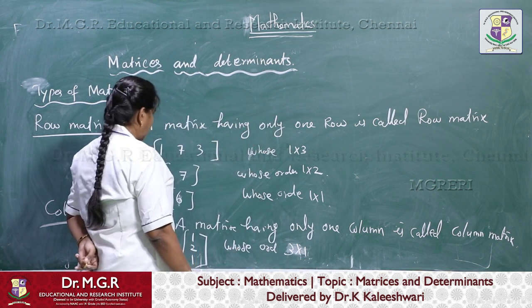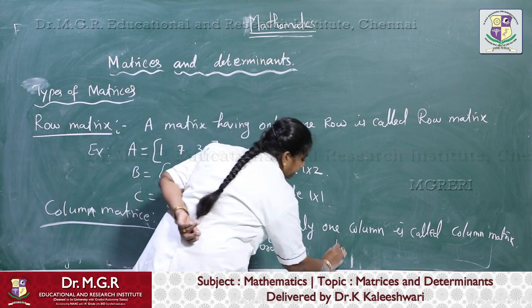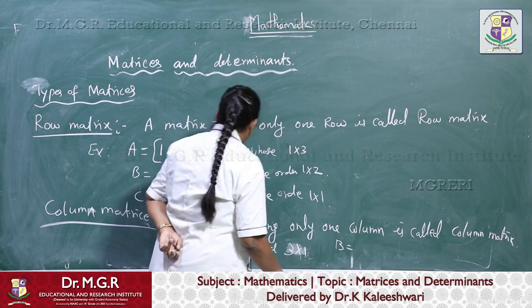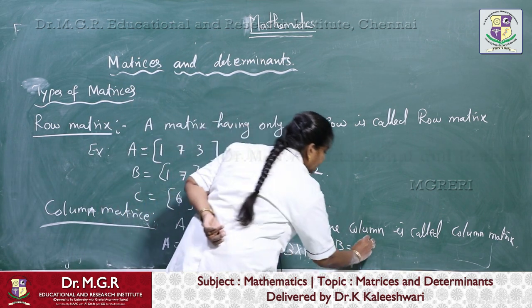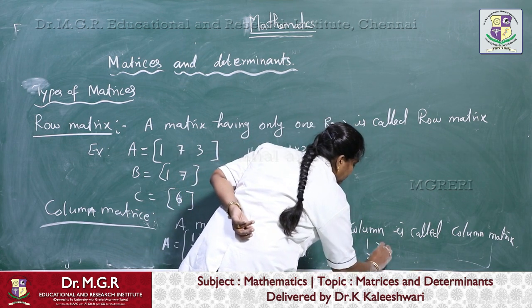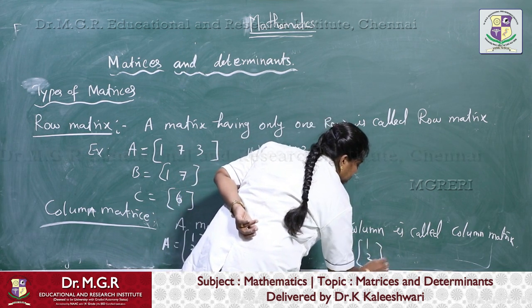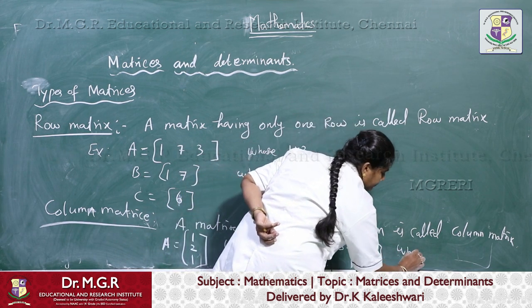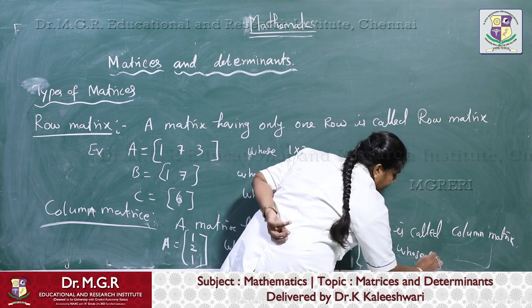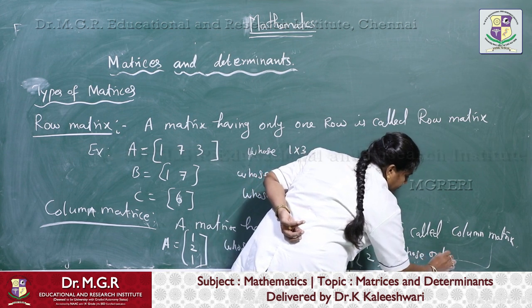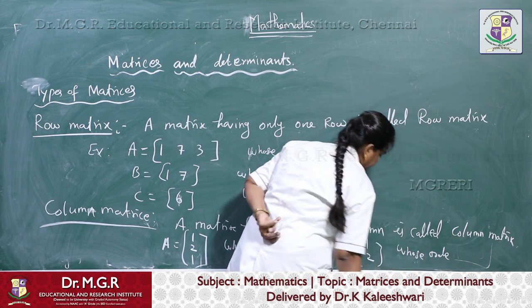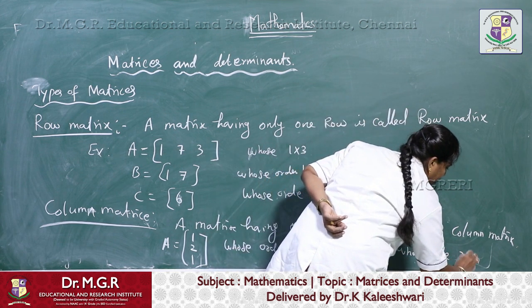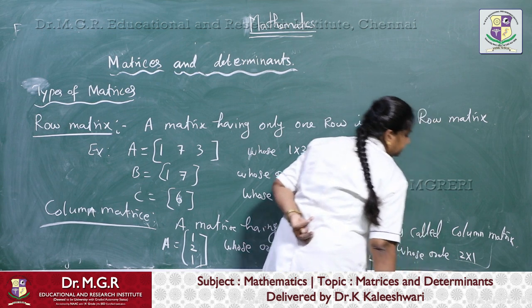And one more example: B is another matrix, [1, 2], having only one column, whose order is 2 by 1.